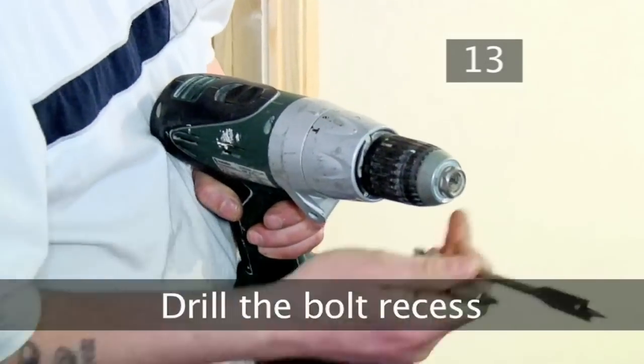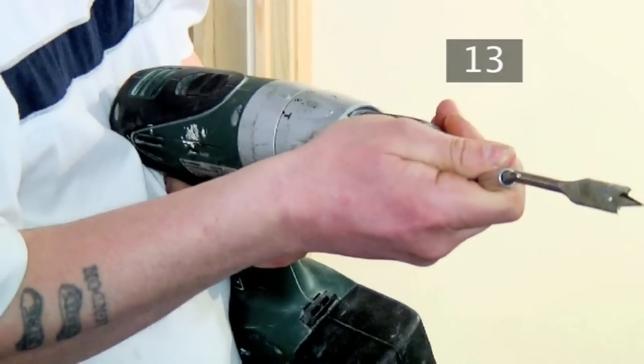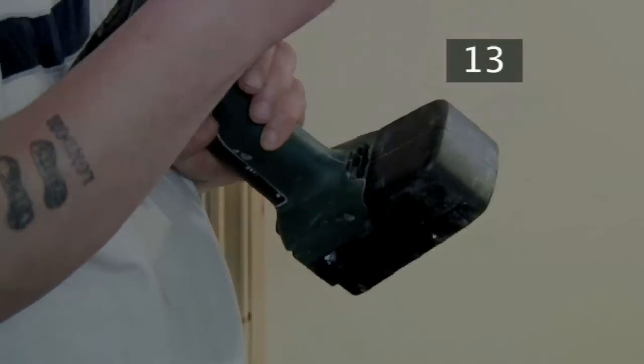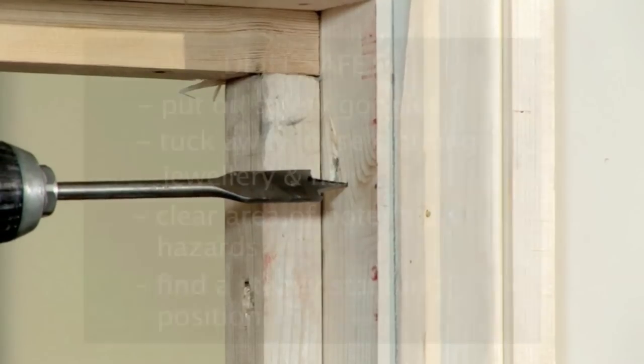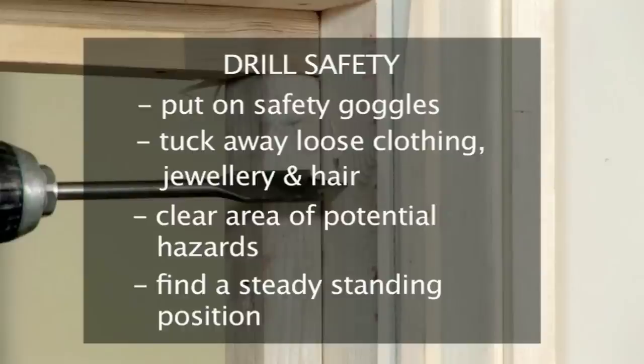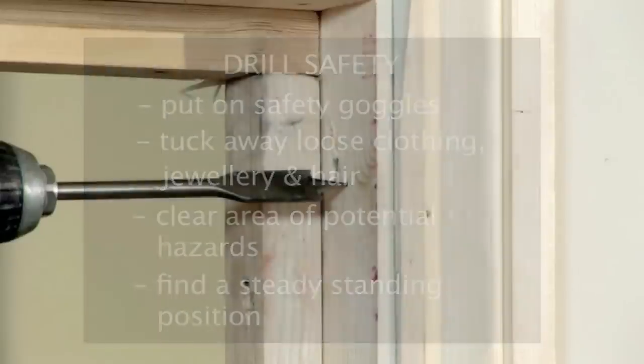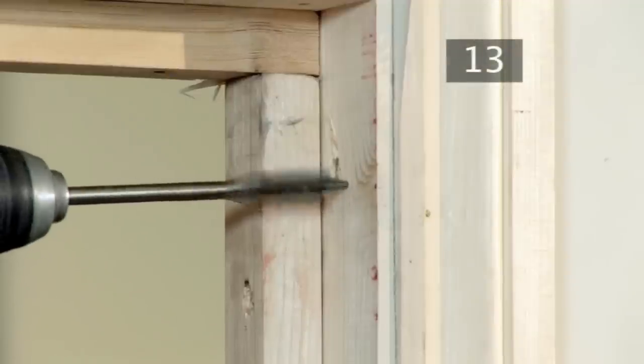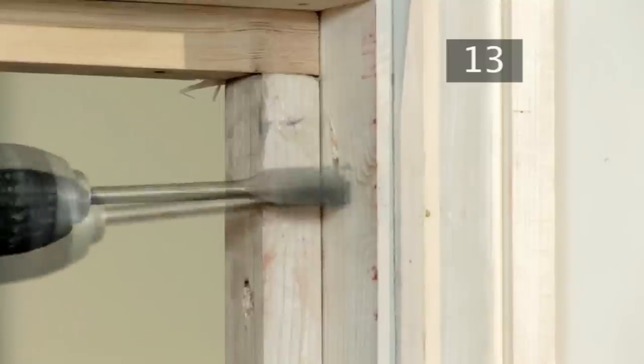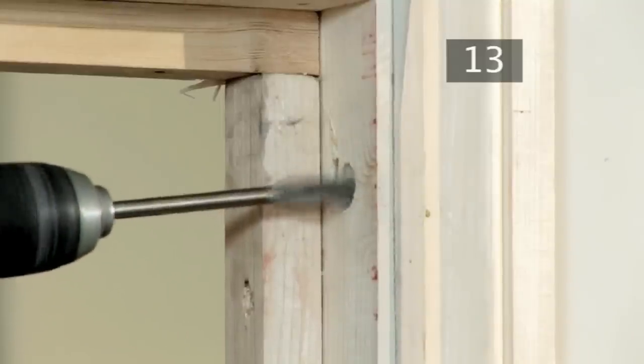Step 13. Drill the bolt recess. Reattach the first wood cutting bit that you used earlier. Remember drill safety. Now hold the bit over the indentation and drill a hole that is deep enough for the bolt. Run the drill back and forth to ensure a smooth hole.